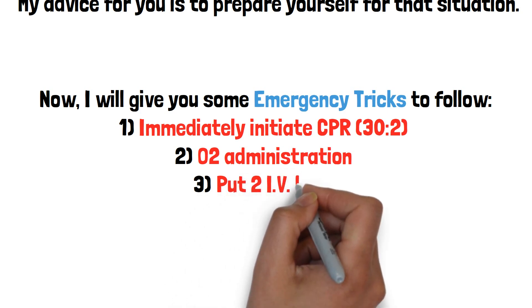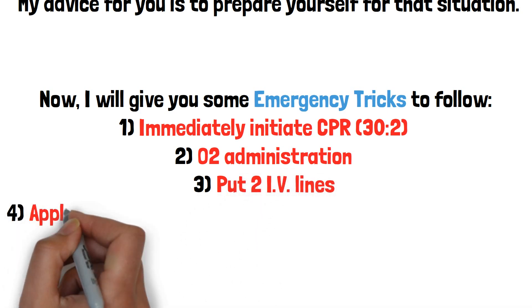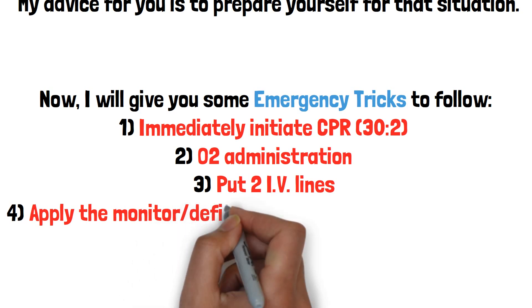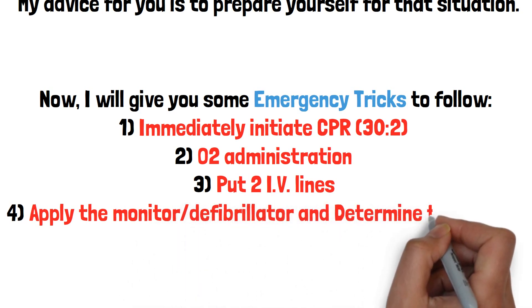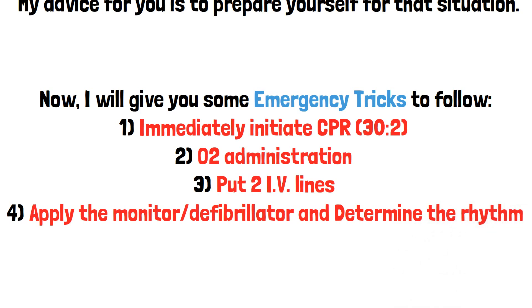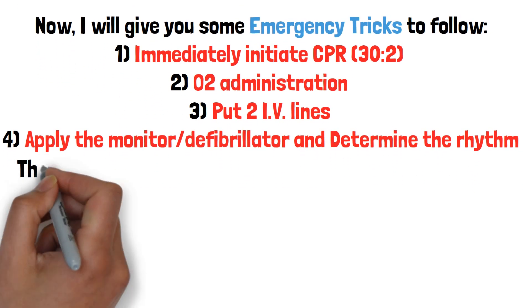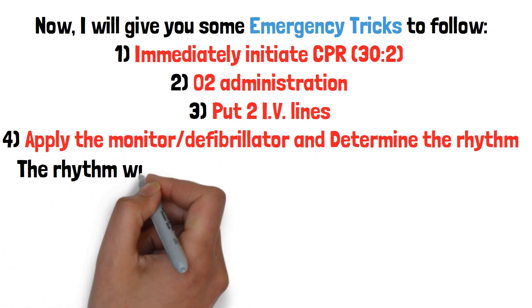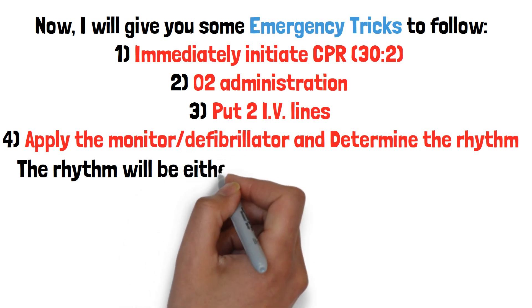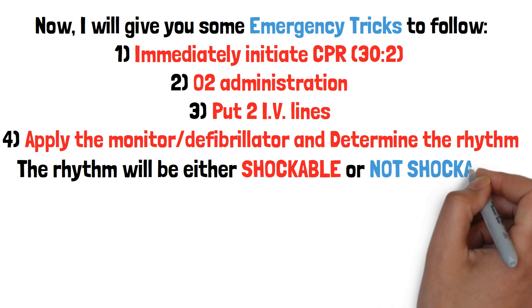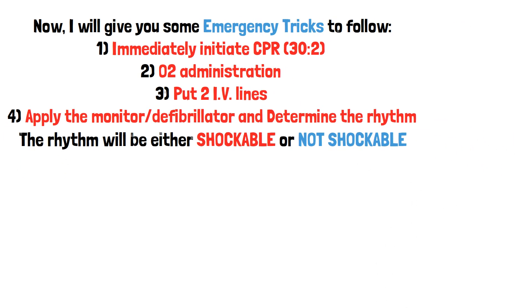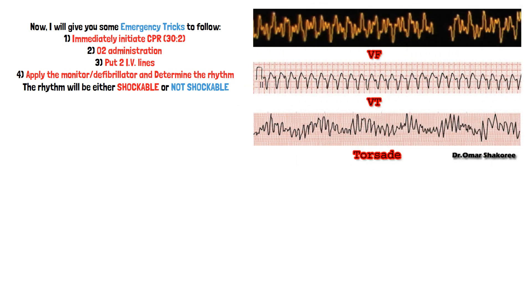Secondly, put oxygen, put two IV lines, and ask for the monitor and defibrillator. Try to know what rhythm your patient has. We have two types of rhythms in a patient with no pulse: either the monitor will show you a shockable rhythm, or it is a non-shockable rhythm.